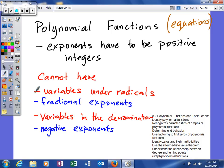If you look at the first red one, it says variables under a radical. If you look at the second red one, we're talking about variables in the denominator.